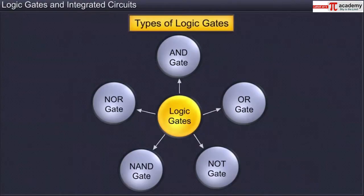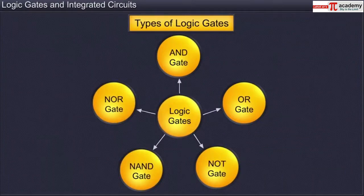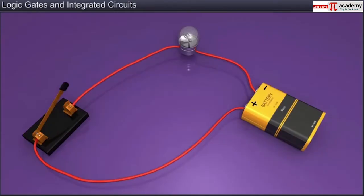The five commonly used logic gates are the AND, OR, NOT, NAND, and the NOR gates. Let us use simple circuits of one or more switches and a bulb to understand logic gates.